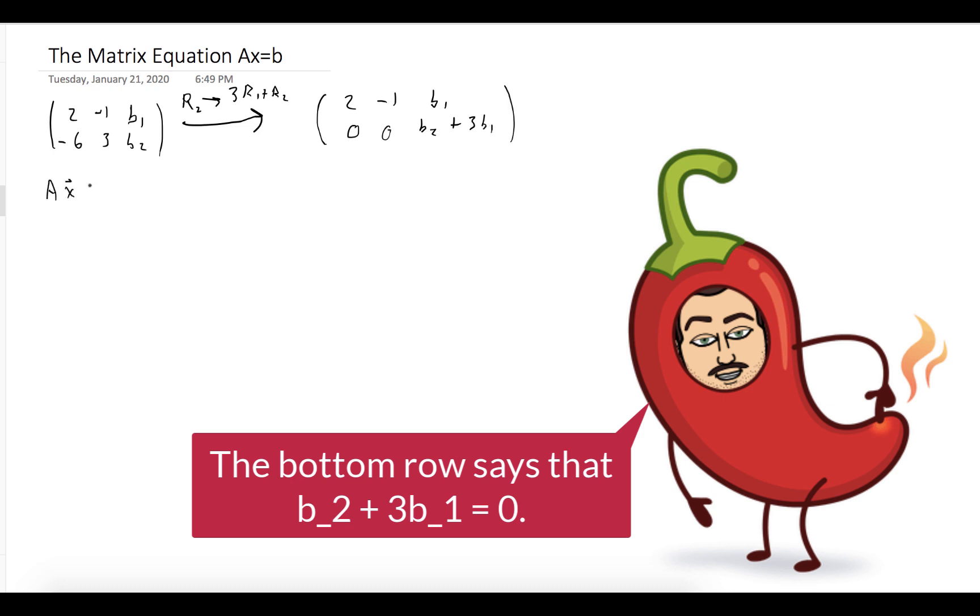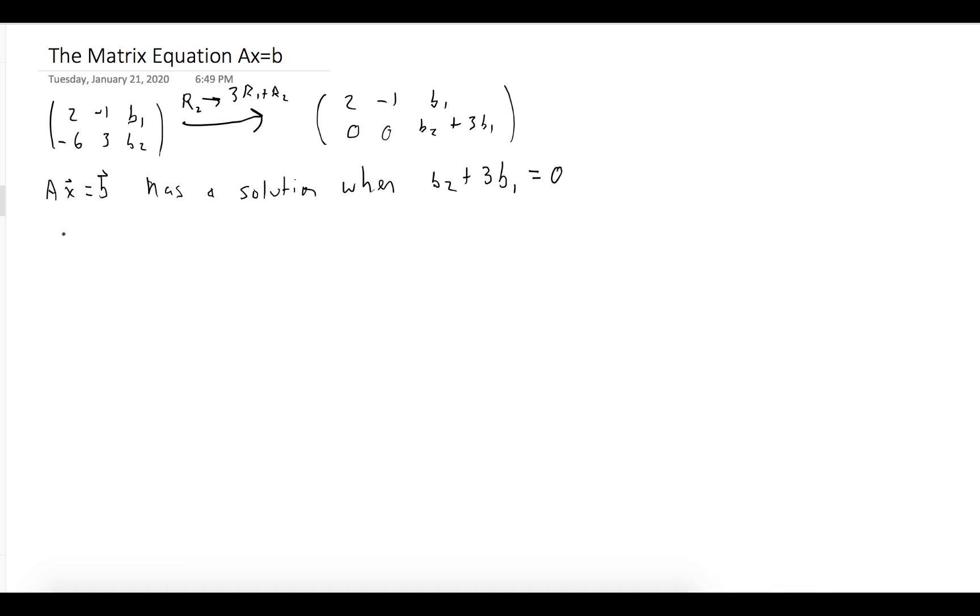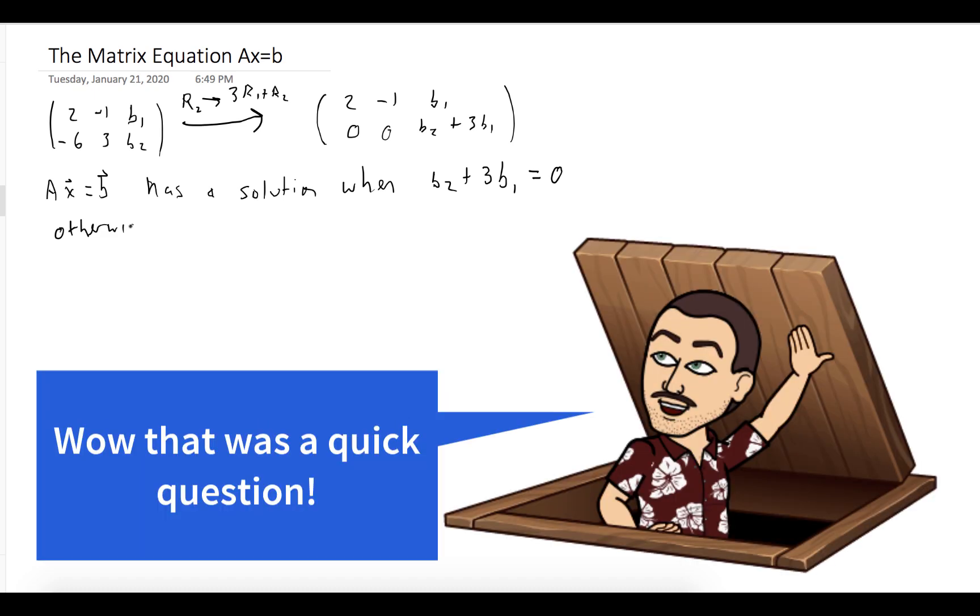We can see from that bottom row that Ax equals b has a solution when b_2 plus 3b_1 equals 0. Otherwise, Ax equals b does not have a solution.